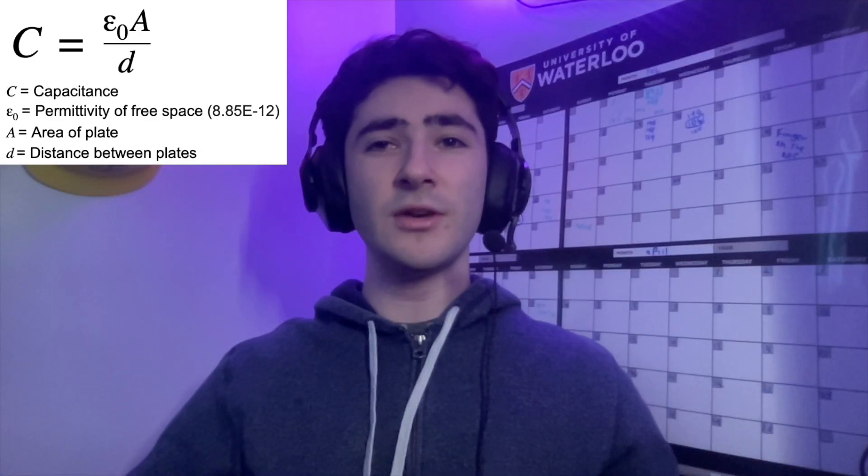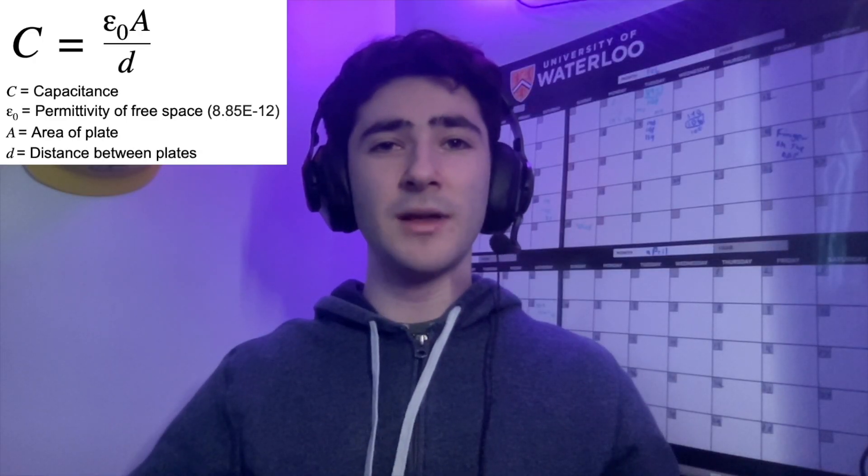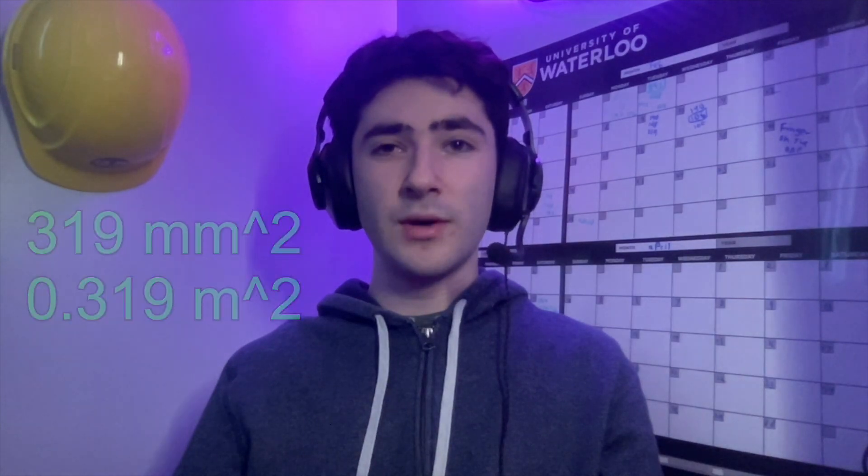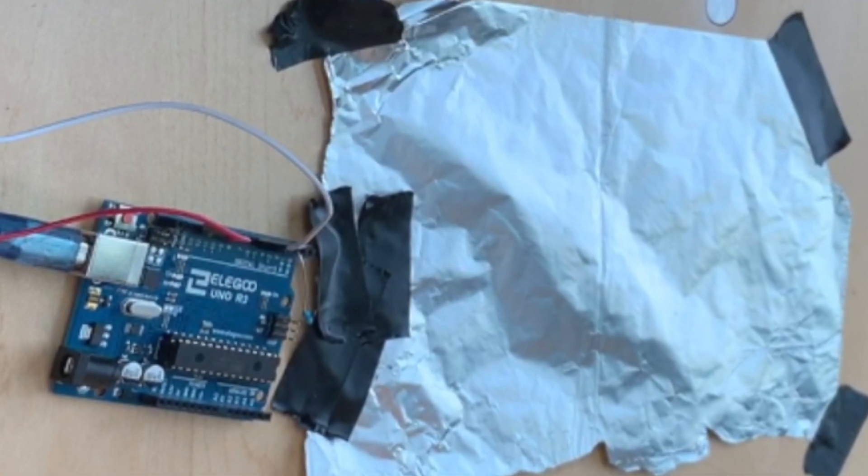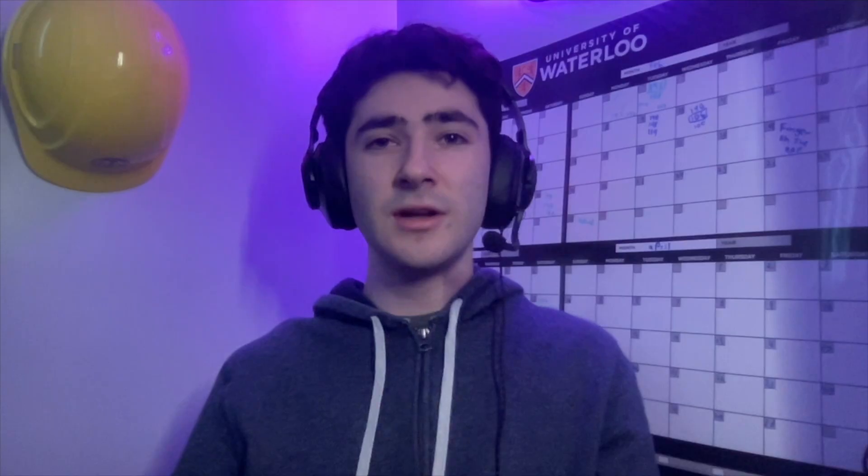Additionally, capacitance is linearly proportional to the area of the plate, so if I use a greater plate, the capacitance will increase. The area of the plate I used was about 319 millimeters squared, or about 0.319 meters squared, so if I plug that area into the capacitance equation, my equation and graph will look something like this.